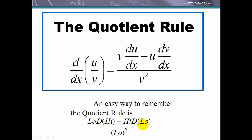Some people like to say low d high which means take the low function the bottom function and then the derivative of the high function the numerator minus high d low all over low squared. So it doesn't matter which way you remember it but bottom line we need to remember the quotient rule.